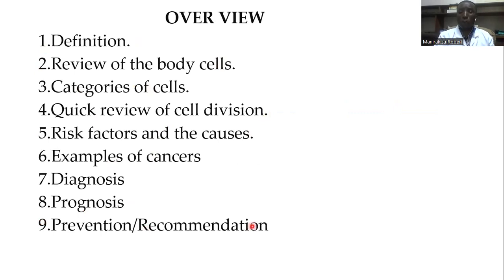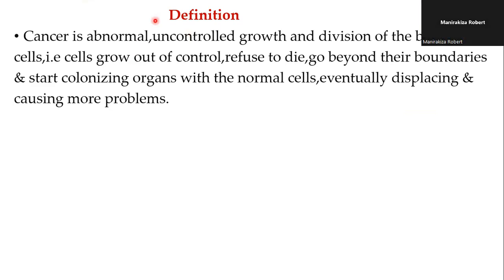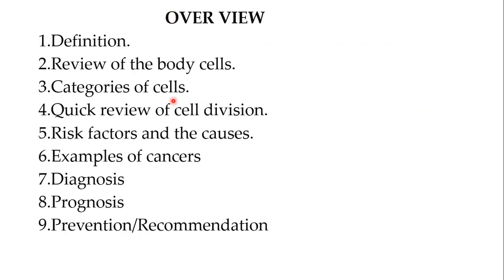By definition, what is cancer? Cancer is the abnormal and uncontrolled growth and division of body cells. That is to say, cells grow out of control, refuse to die, go beyond their boundaries, and start colonizing organs with the normal cells, eventually displacing them and causing more problems — and among those problems, death is included.